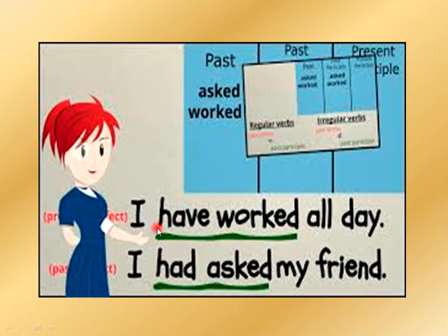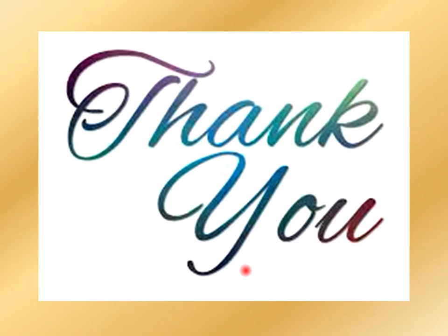Some more examples: 'I have worked all day.' 'I had asked my friend.' Here, 'worked' and 'asked' are the past participle forms. In short, you can call the past participle the third form of the verb. You all know about the first, second, third, and -ing as the fourth form. So the past participle is basically the third form of all verbs.